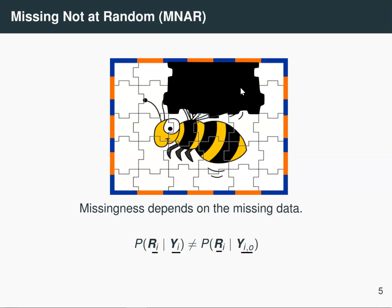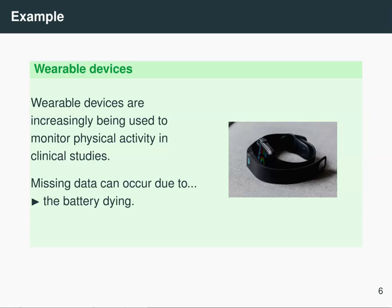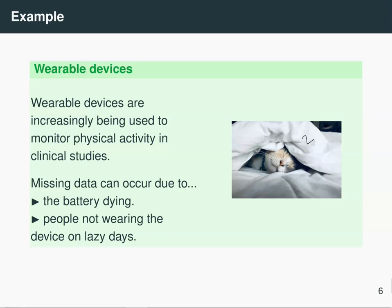So those are the three missing data assumptions. Now let's look at how they might apply when you are actually analyzing data. For example, we can delve into the world of wearable devices — things like the Fitbit or smartphones which measure your physical activity. These could be used in a study where people's step counts are measured before and after some kind of intervention. There are lots of potential ways you can encounter missing data here — for example, the battery might die, or people might choose not to wear the device on days where they're feeling a little bit lazy. How should we categorize these two possible scenarios?